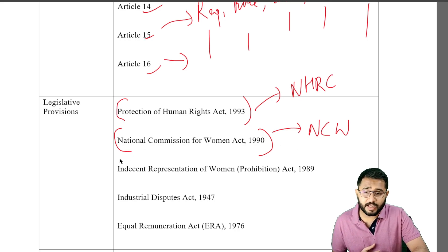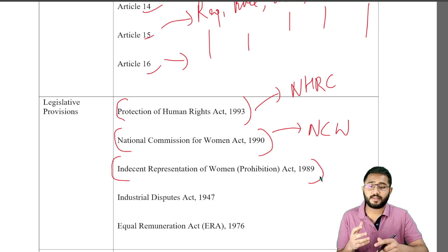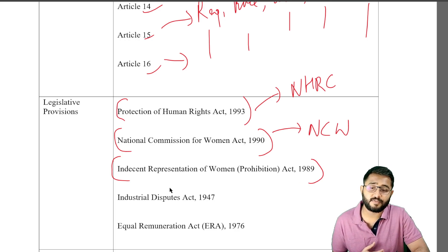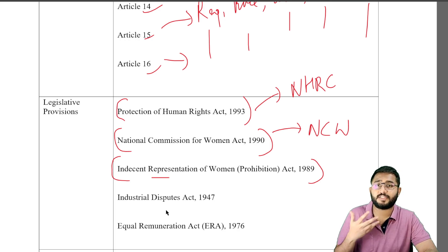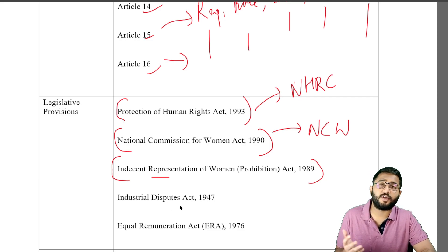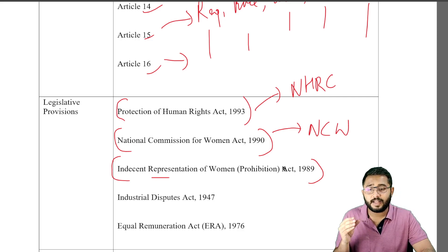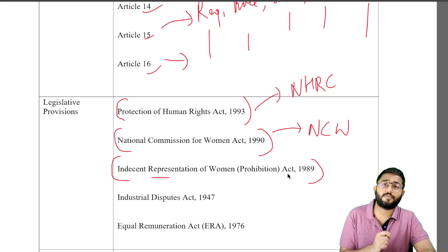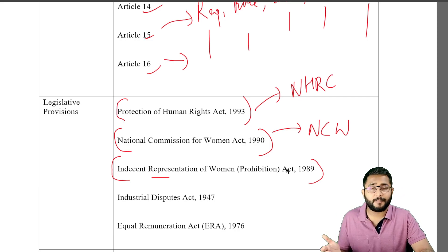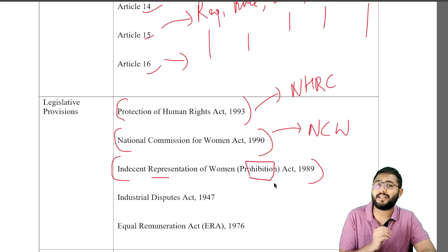We also have the Indecent Representation of Women (Prohibition) Act of 1989. This legislation becomes even more important today in the age of digital life where deep fakes and AI-generated morphed images are prevalent all over the internet. The Act says that indecent representation of women, be it in any form of media, published or advertisement, is completely prohibited.